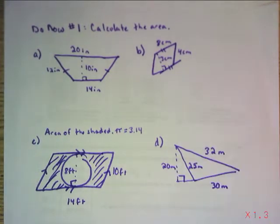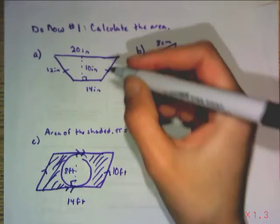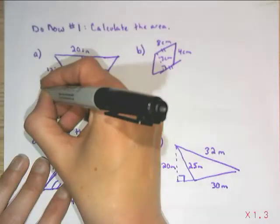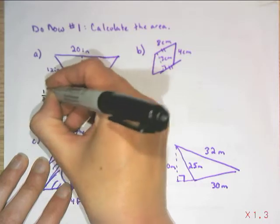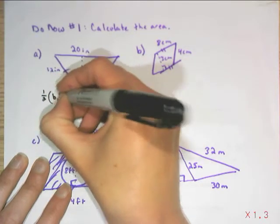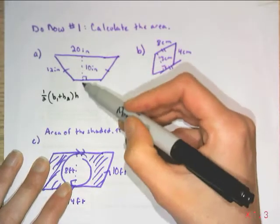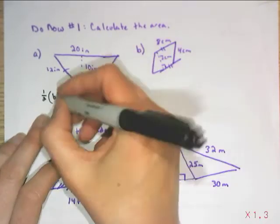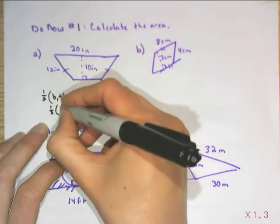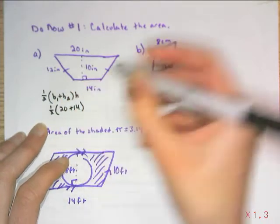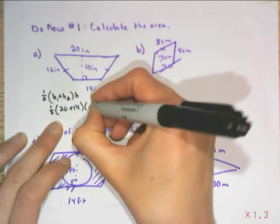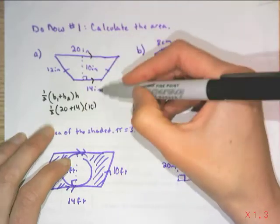So with this first example, we have a trapezoid, and I know the trapezoid formula is the average base length times the height of the figure, which again must be perpendicular to the bases. So I have half of the sum of 20 plus 14 times the height, which is 10, because that's the one that's perpendicular to my two parallel bases.